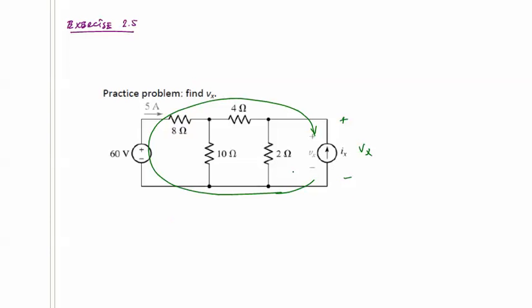When I go around this loop, I need to know the voltage across this branch, which I do at 60 volts. I need to know the voltage across the 8 ohm resistor, which I can easily find because we were given the current of 5 amps. So 5 times 8 is 40 volts, so I know that voltage. And the one thing I don't know is the voltage across this 4 ohm resistor. So that's what we really need to find.